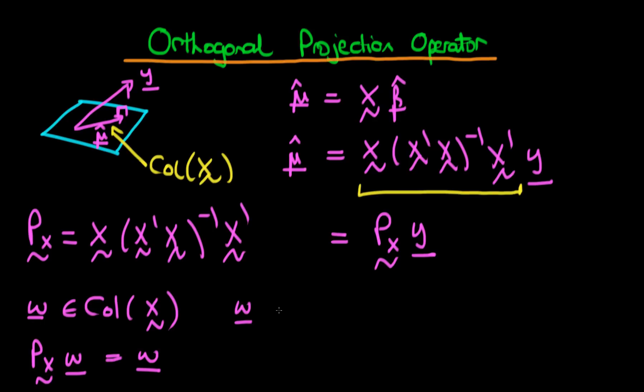Similarly, if we have a vector w which is at right angles with the column space of X, then we should expect that Px times w should be equal to 0 because there is no way for us to project down that particular vector. You imagine a vector w which looks something like this, then there's not actually going to be any projection of w onto the column space of X.